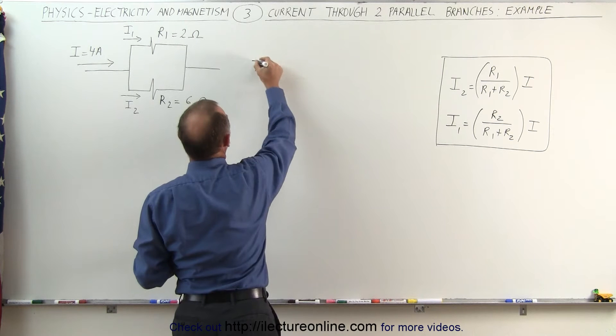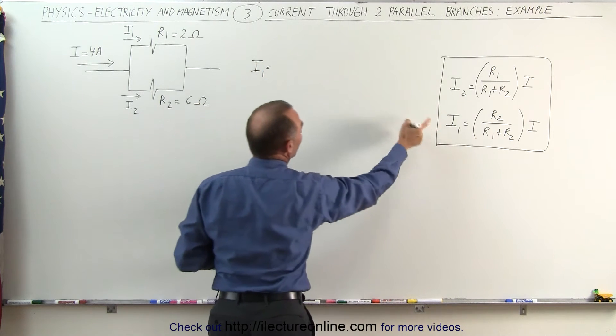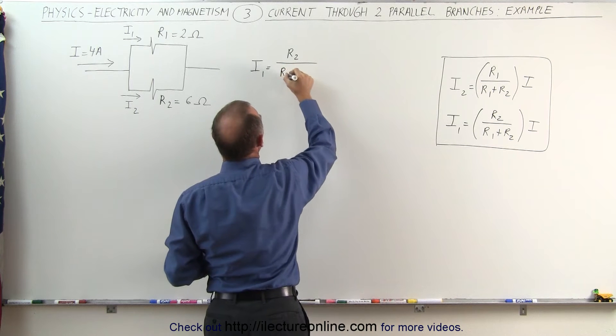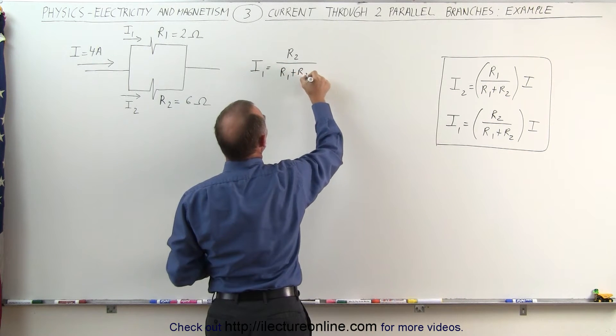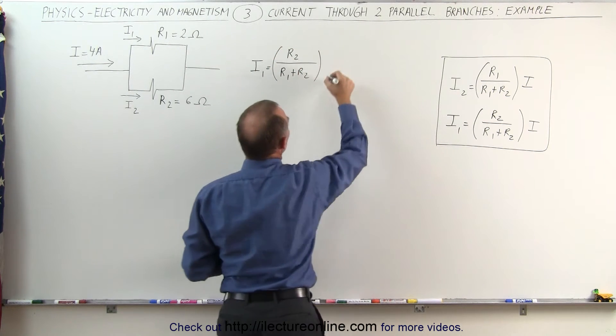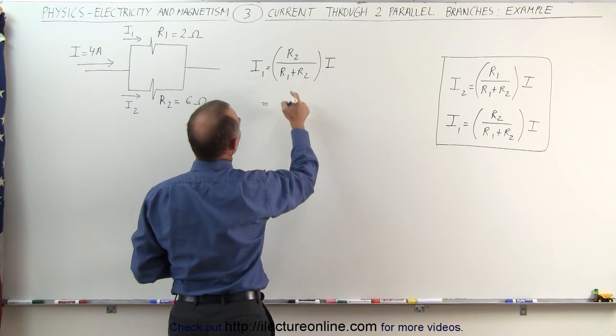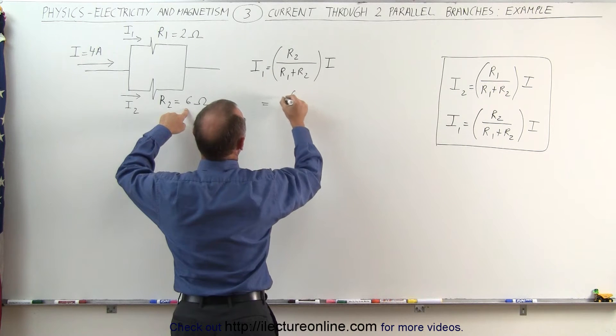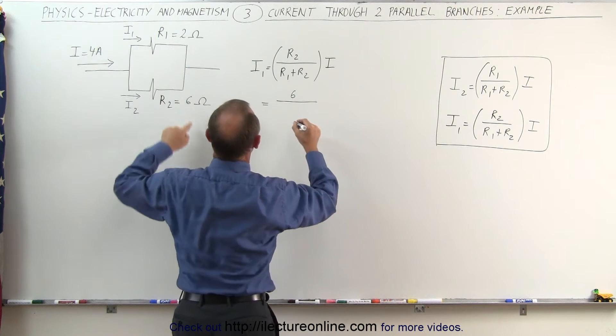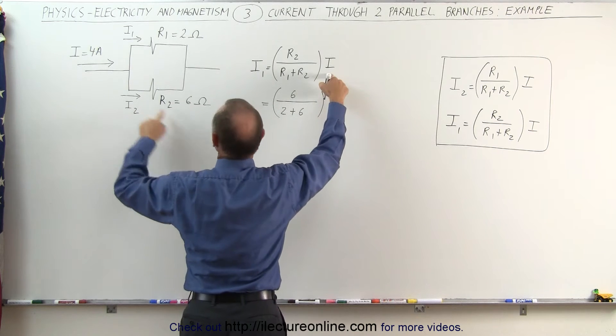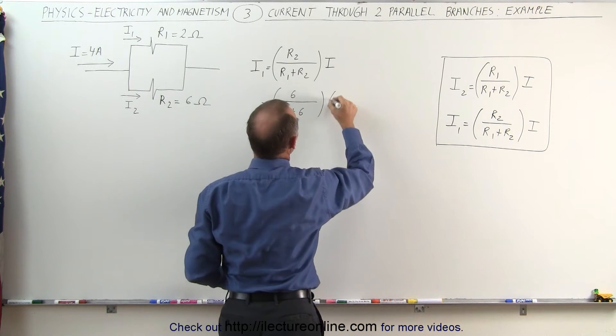In this case, we have I1 equals the resistance in the other branch divided by the sum of the resistances of the two branches, R1 plus R2, times the total current entering that branch point. So this is equal to 6 ohms divided by 2 plus 6, times the current entering the branch point, which is 4 amps.